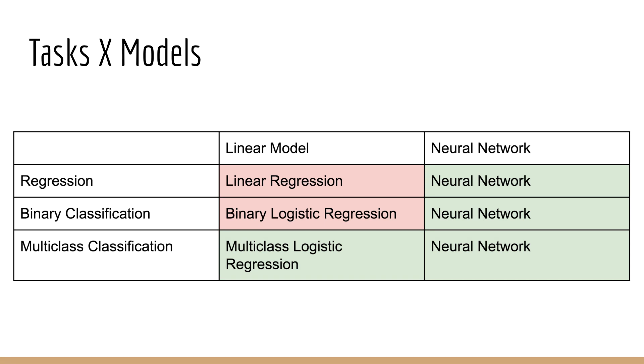I created this table to help summarize each of these combinations. By the way, this table is like a cross-product between these two different sets. The first set is the type of model, either a linear model or a non-linear neural network. That goes in the horizontal axis. The second set is the type of task, either regression, binary classification, or multi-class classification. That goes on the vertical axis. The topics highlighted in red were covered in the prerequisites, while the topics highlighted in green are covered in this course.